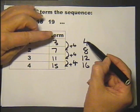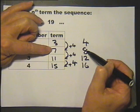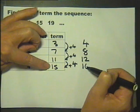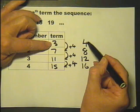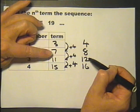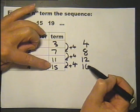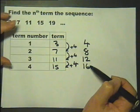We look at these values and the actual terms to see if we can see a connection. And in fact, if you subtract 1 from each of these numbers, you'll get the term. 1 from 4 is 3, 1 from 8 is 7, 1 from 12 is 11, and 1 from 16 is 15. That's the key.